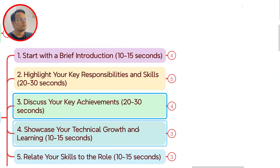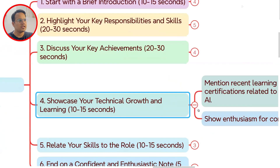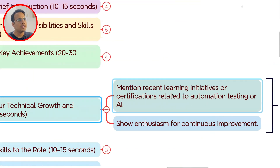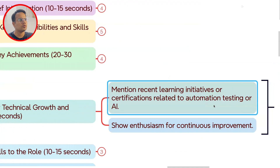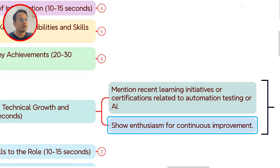The next part is to showcase your technical growth and learning — basically your learning initiatives and certifications related to automation testing. AI is also very important right now. You have to tell about what different things you are learning in automation testing to keep yourself updated. Recently, AI is breaking new ground, so you have to show how you are expediting your own learning and show enthusiasm for continuous improvement.